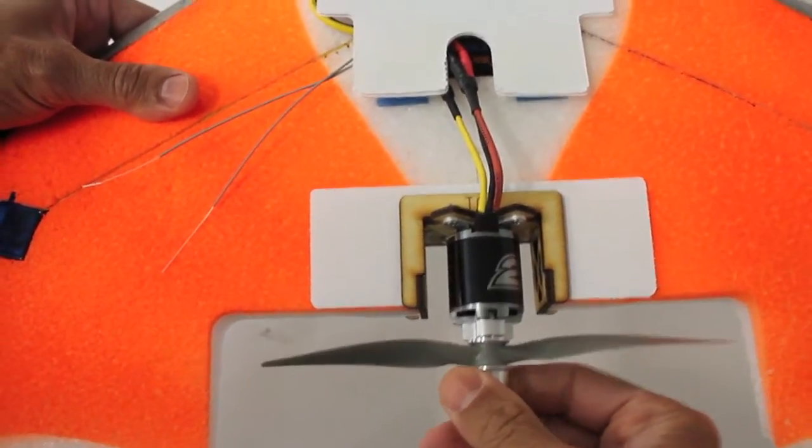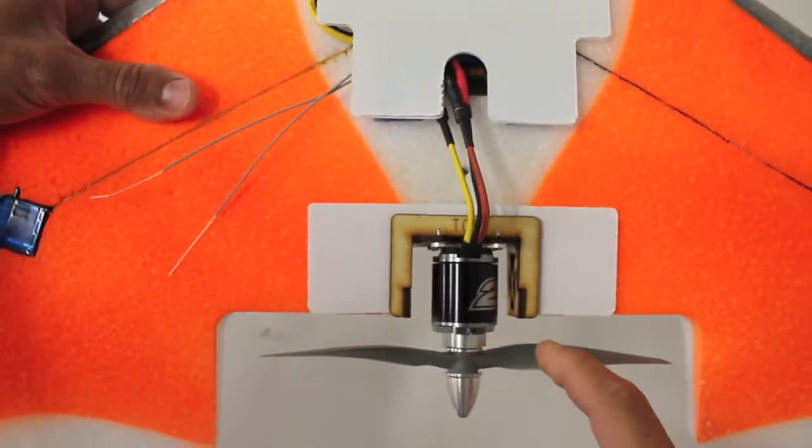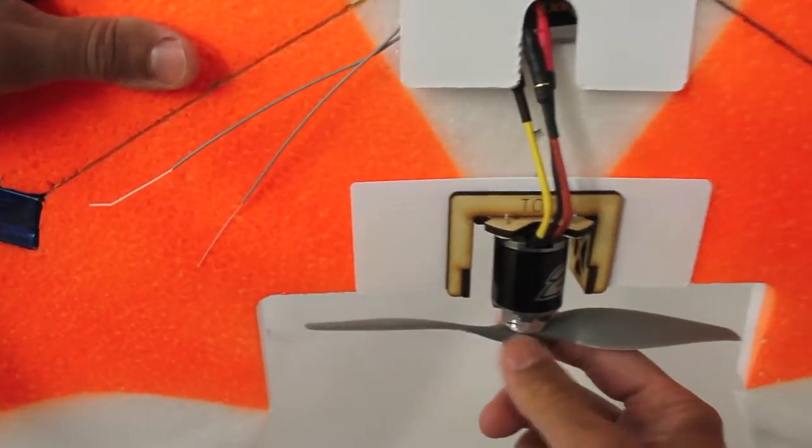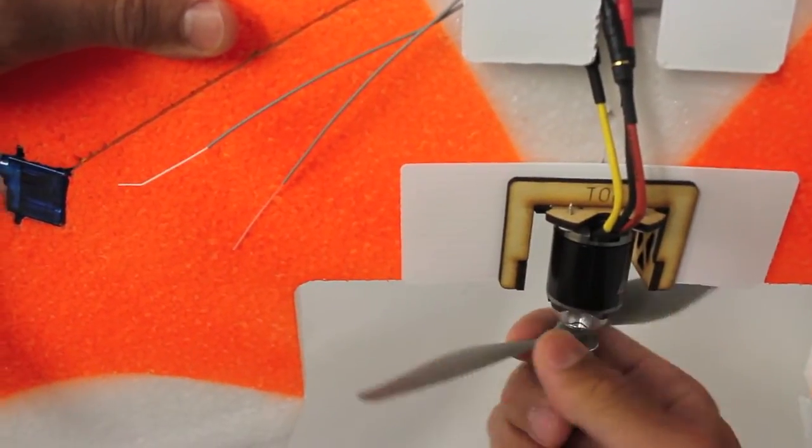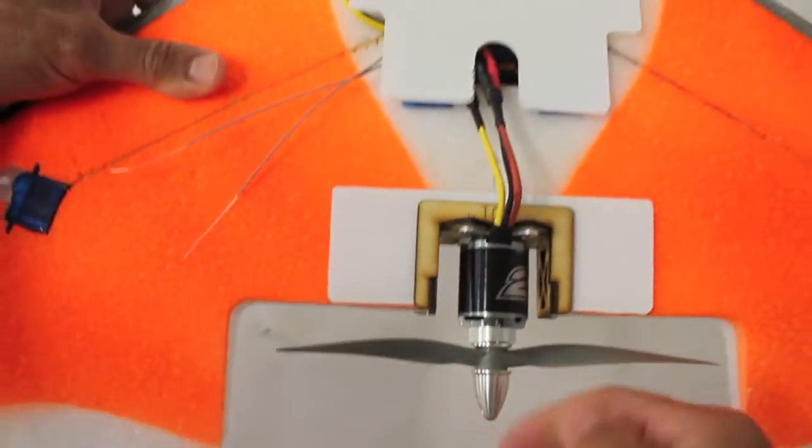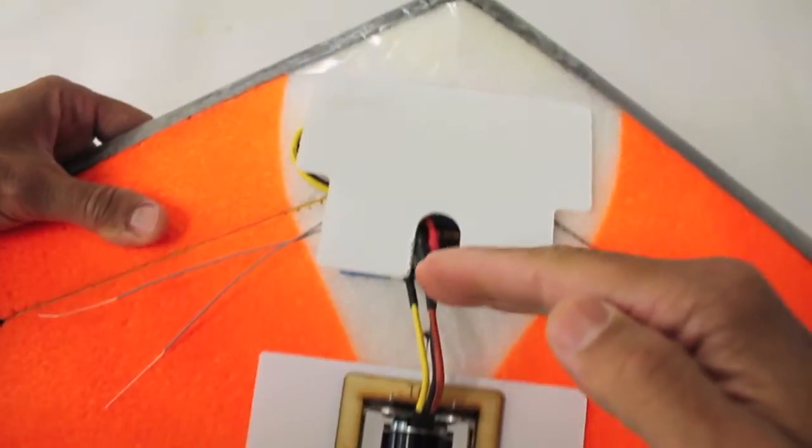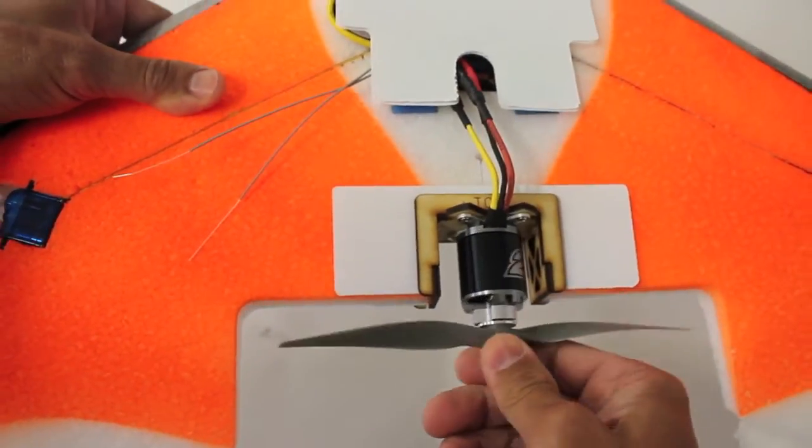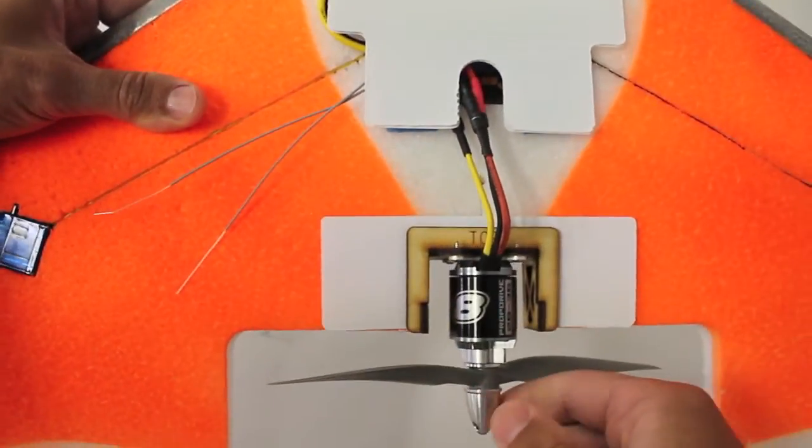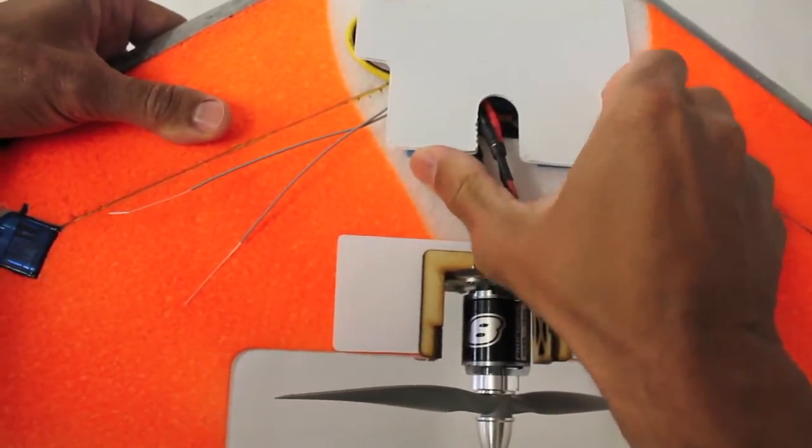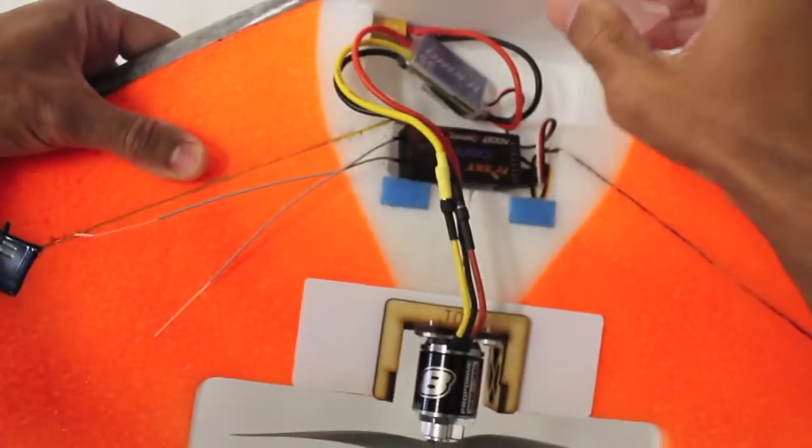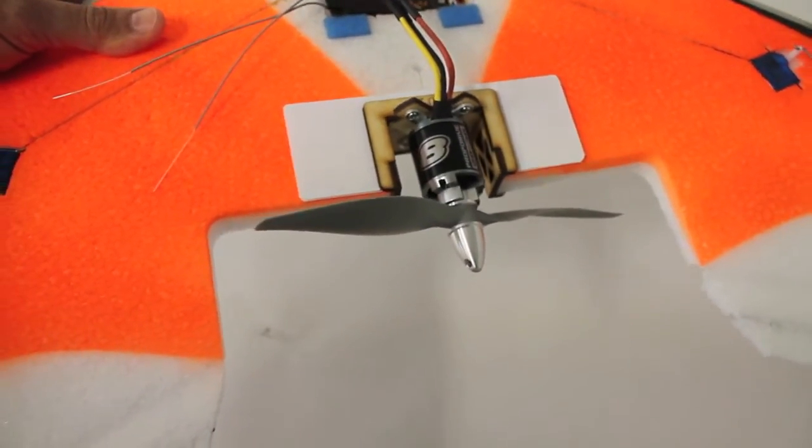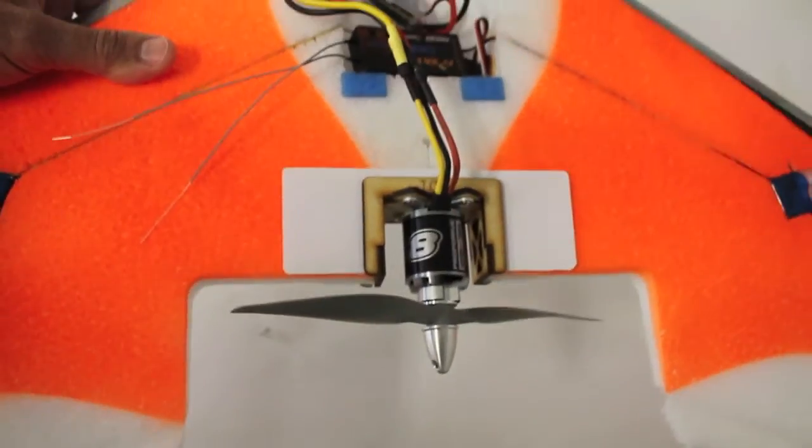We'll go ahead and install the prop. Now our prop is mounted. Keep in mind on a flying wing, since the motor sits in the back, you actually want the label of the prop—this is APC facing forward. Because normally your prop would be up here. So just something to keep in mind. So it looks like everything's ready to go. I'll hook up the battery and then we'll see if all of our control surfaces and our motor work properly.